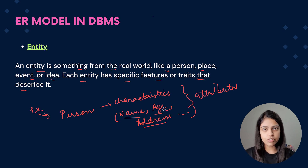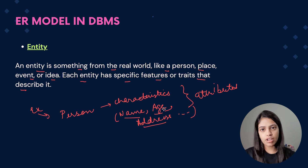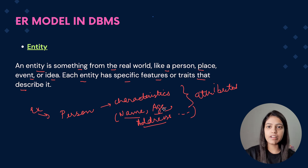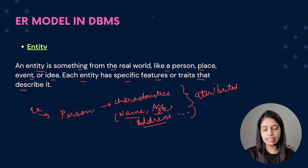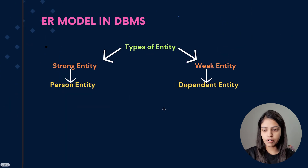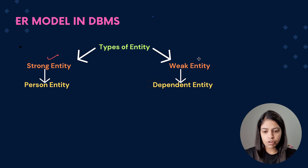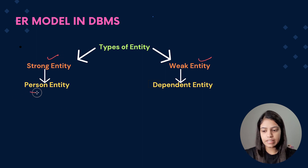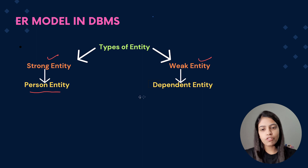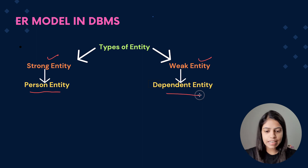Now there are two types of entities. First one is a strong entity and second one is a weak entity. Here I have given an example of a person entity and a dependent entity.